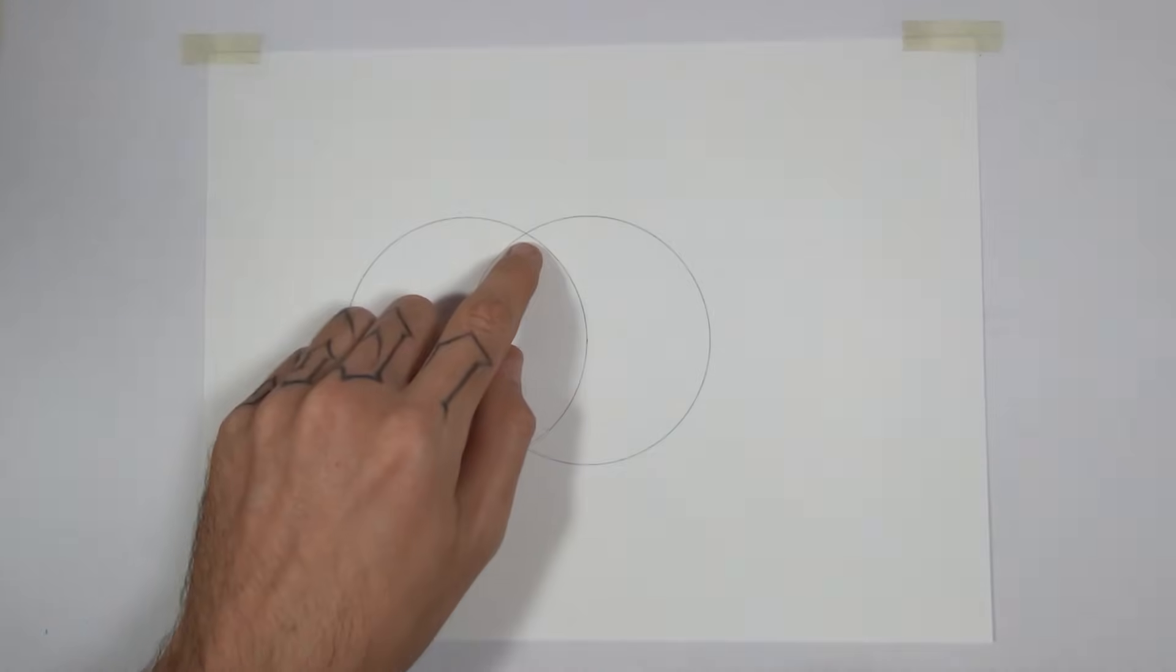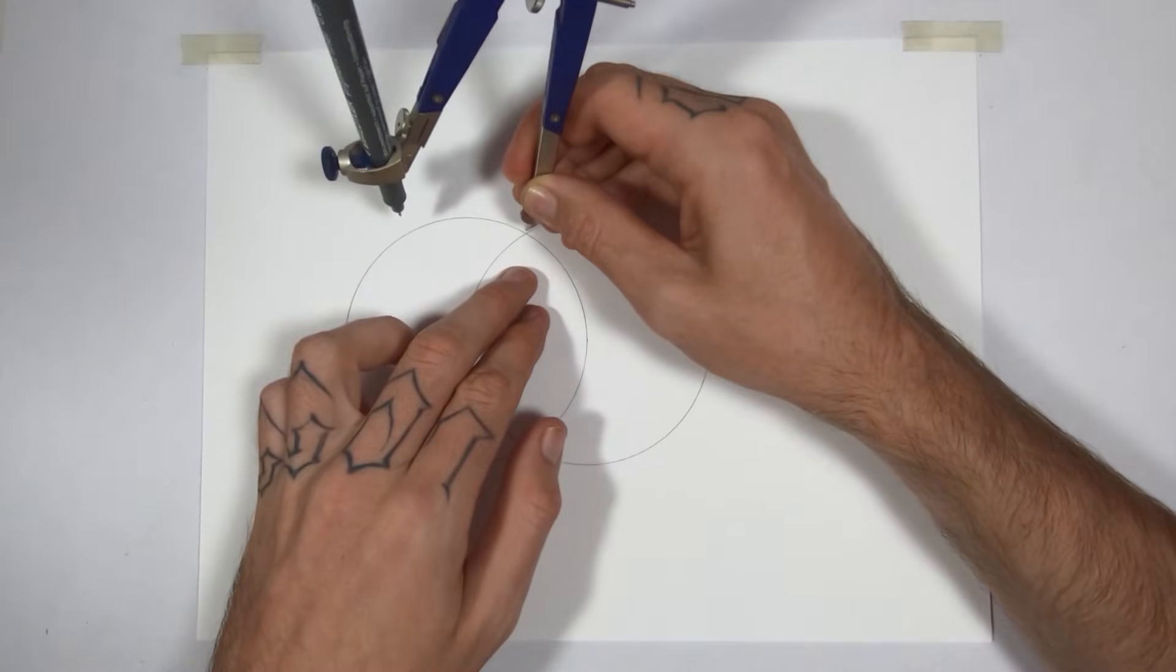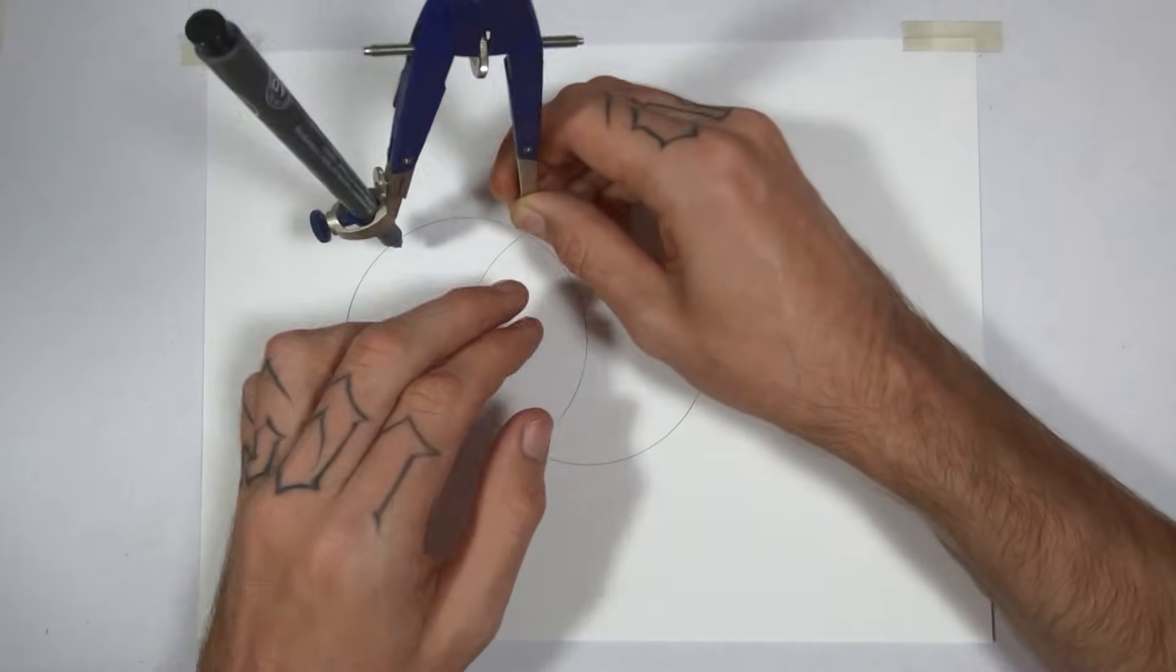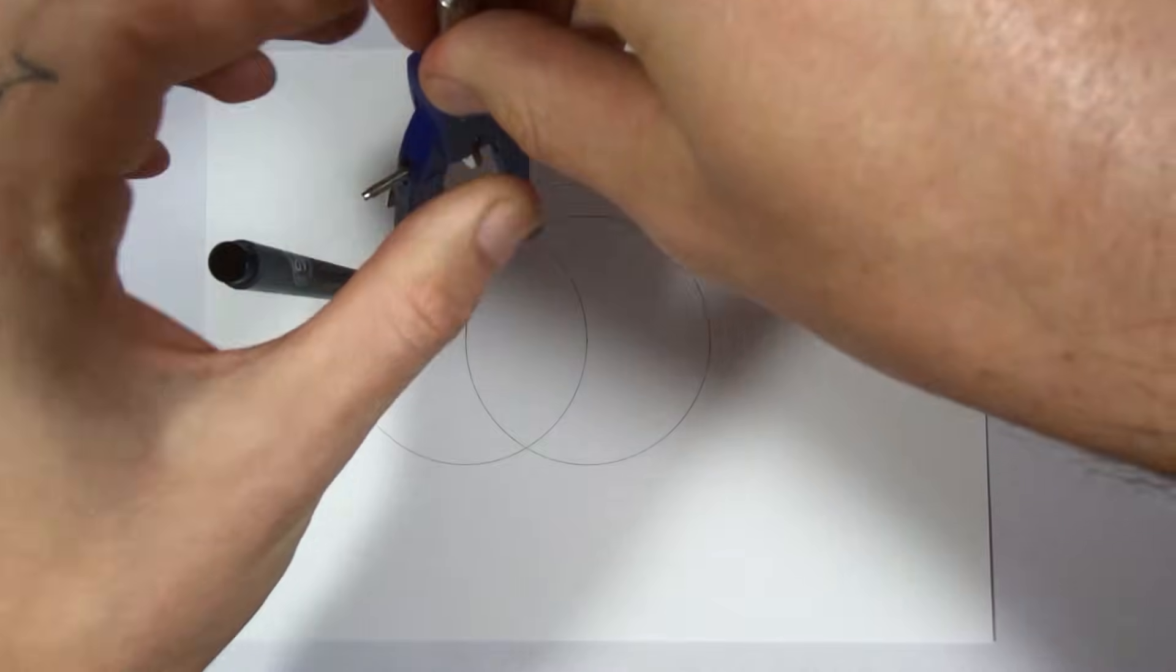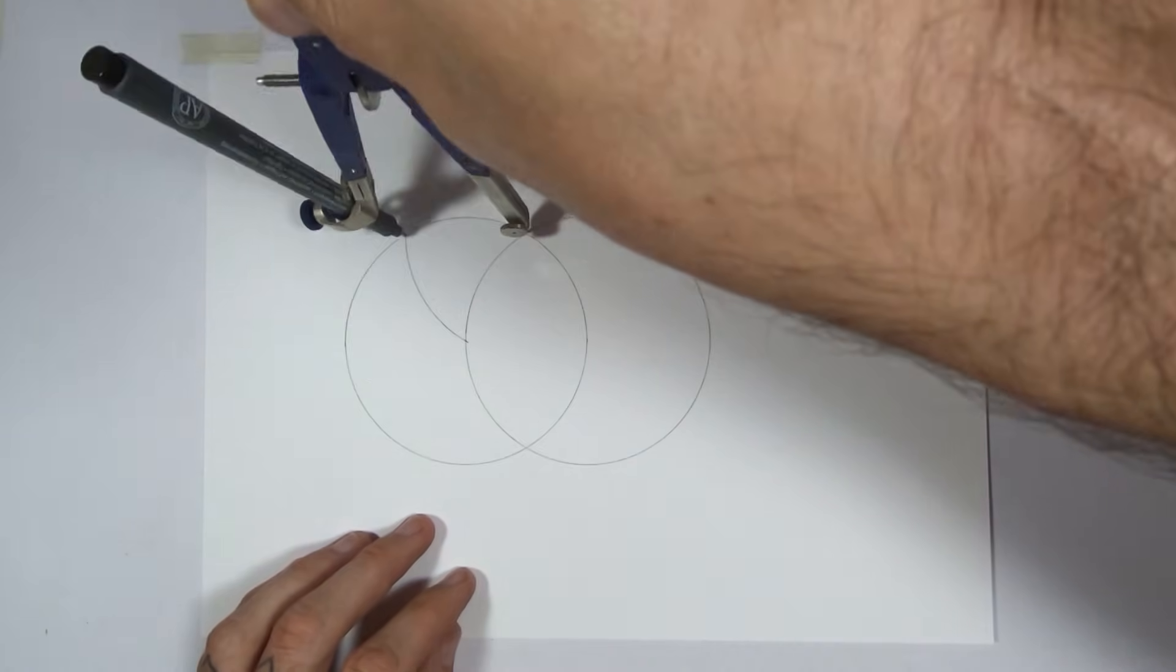Then I'm going to use this new intersection here to draw another circle and I'll just work my way around. Every new intersection that I make will be the next center point for my next circle. I keep working my way around until I've got a seed of life.